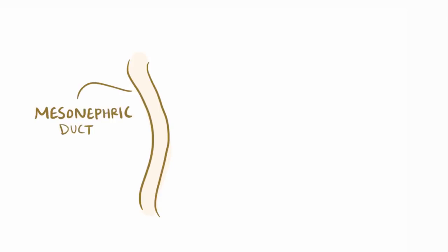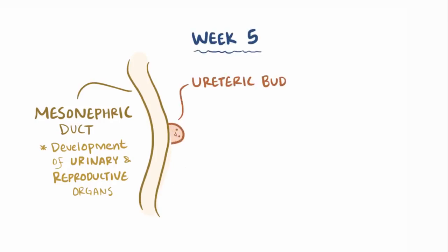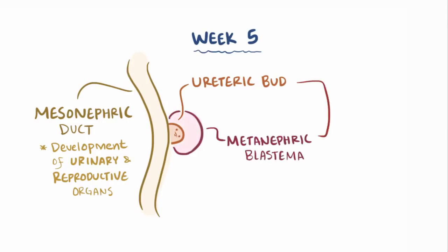During fetal development, you've got this structure called the mesonephric duct, which is involved in development of urinary and reproductive organs. During the fifth week of gestation, a little guy called the ureteric bud starts pushing its way into another structure called the metanephric blastema, and together these two embryologic structures go on to develop into a kidney.